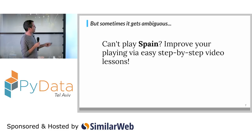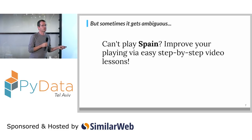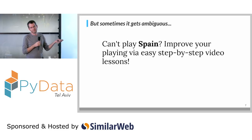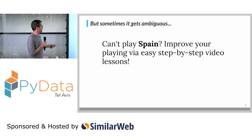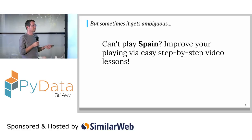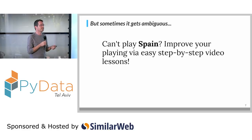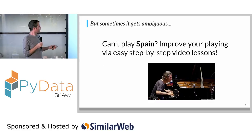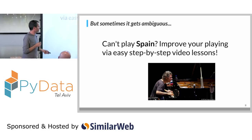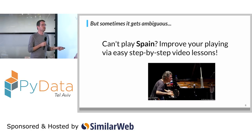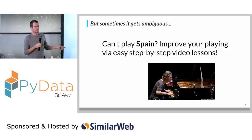Context is also important for human languages. Check out this sentence: 'Can't play Spain — improve your playing via easy step-by-step video lessons.' Spain here is not the name of a country. It's not the name of a location. So it is an entity, but not a location. That's the problem we're dealing with.